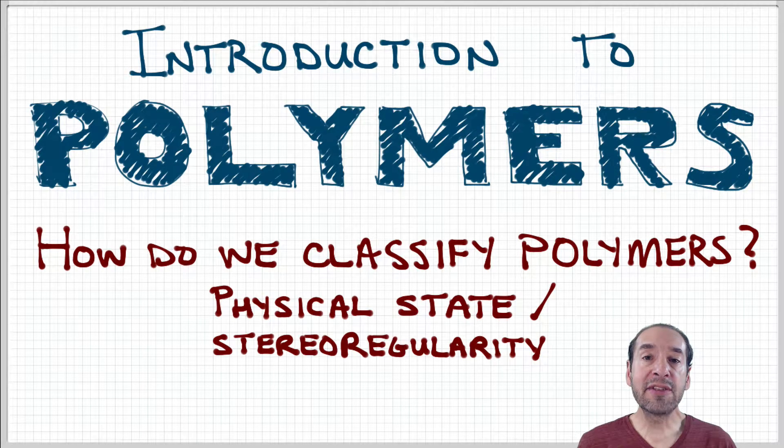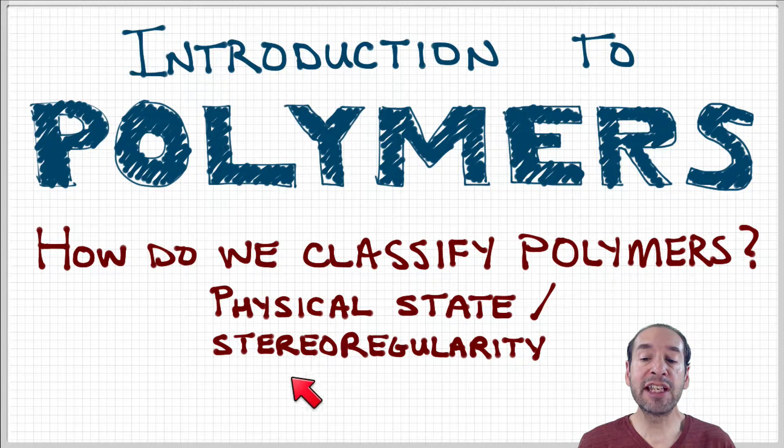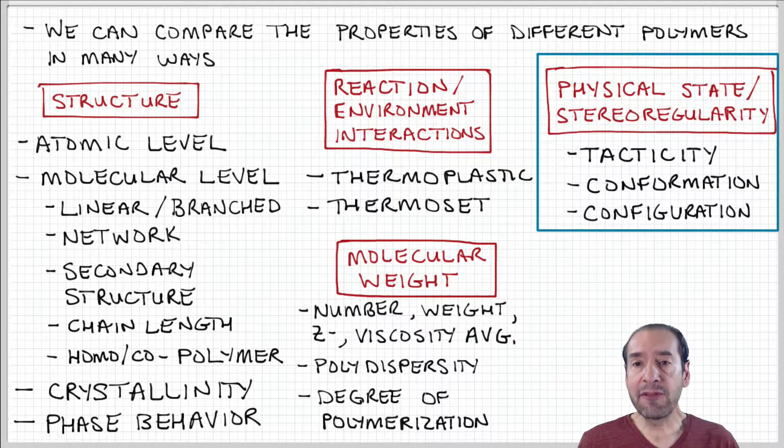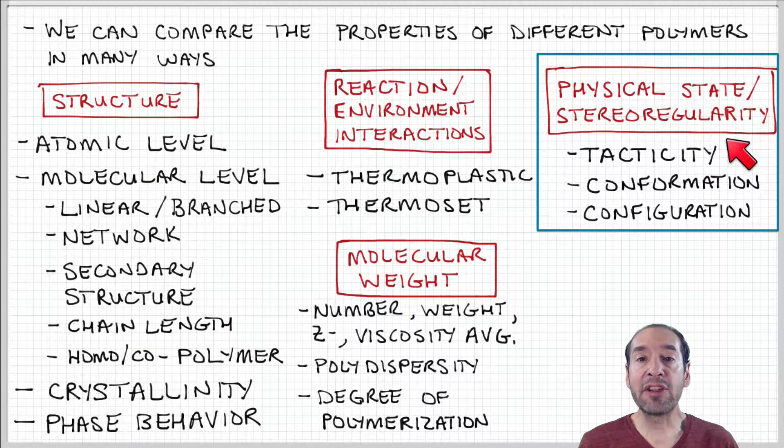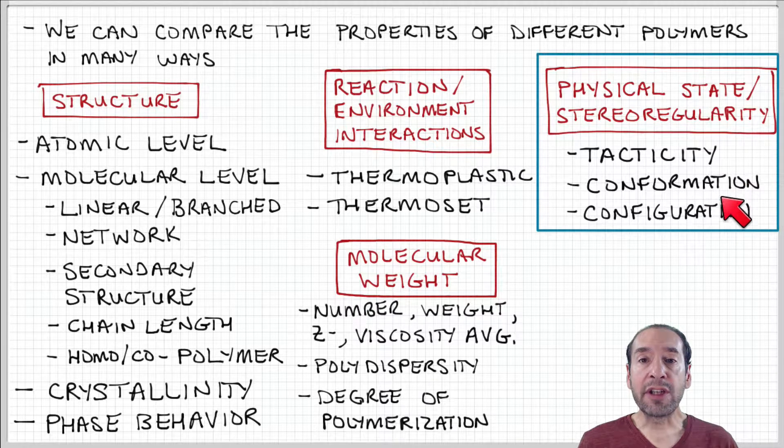Another way that we can classify or distinguish between different kinds of polymers is in terms of their physical state or stereoregularity. And by this, I mean finer level details of how chemical groups are arranged around the polymer backbone.